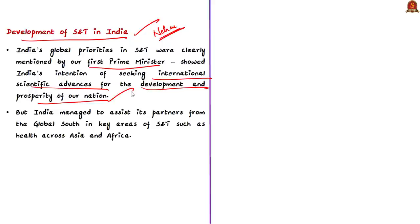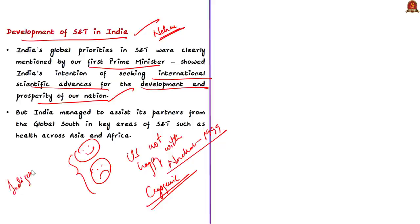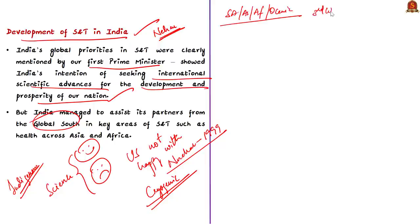Nehru was aware of both the constructive and destructive power of science. This strategy met mixed results in the 20th century because more powerful states like the US sought to curb India's ambitions in critical spheres like nuclear and space programs. When India went nuclear in the 1990s, the US imposed sanctions, and India was refused cryogenic technology for its space programs. Despite all this, India indigenously developed all this technology and also assisted partners from the global south — developing or underdeveloped countries in South America, Asia, and Africa.